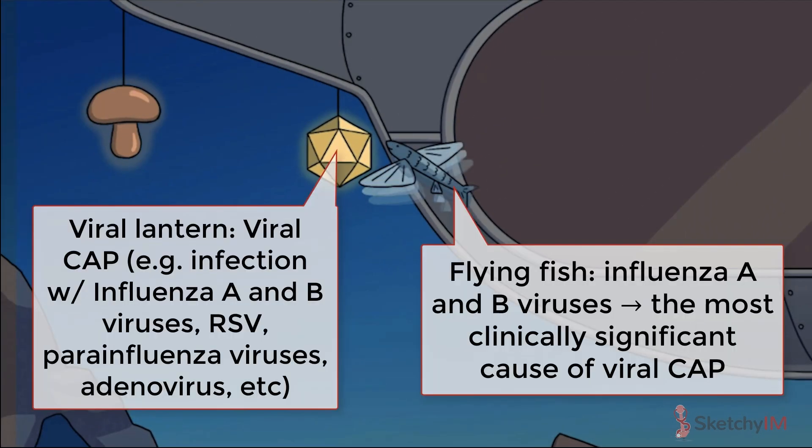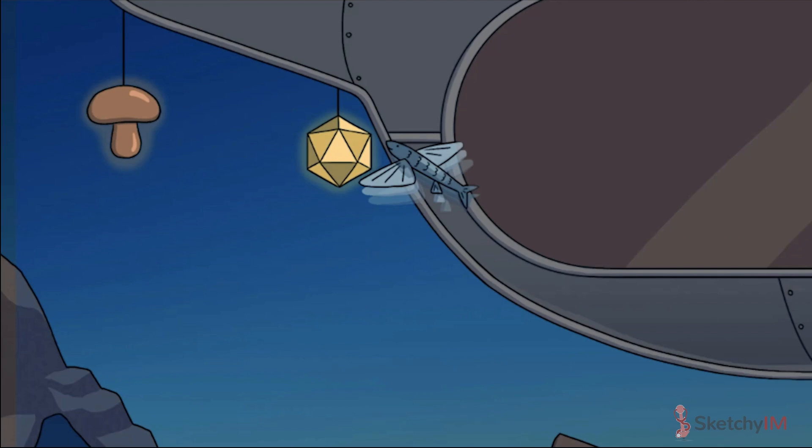Our third big group of pathogens that cause CAP is respiratory viruses, including influenza A and B, parainfluenza viruses, RSV, and adenovirus. The most clinically significant virus of the bunch is influenza, represented by the influenza flying fish. Remember that respiratory viruses can cause a primary viral pneumonia or predispose the patient to a secondary bacterial pneumonia.